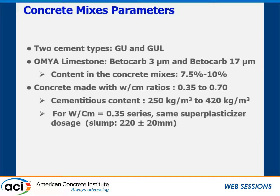For the NRC comparison study, they used GU cement — the Canadian Type 1 general-use cement — and compared it side by side with the GUL. Since GU already has 5% interground limestone, they replaced only 10% of the GU with a 3-micron and a 17-micron product and looked at performance differences across regular mixes at water-to-cement ratios of 0.35, 0.40, 0.50, and 0.70.